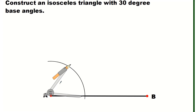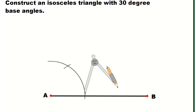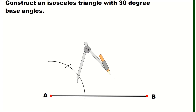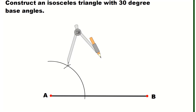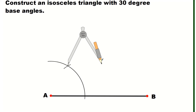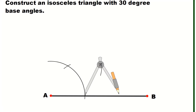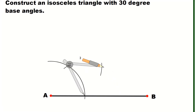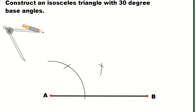This creates a 60-degree angle. From that intersection of the two arcs, I'll place my pointer and construct arcs to make the 30-degree angle. I'll bisect the 60-degree angle into two equal parts, so I'll also mark another arc from here. We have now successfully bisected our 60-degree angle, forming a 30-degree angle.